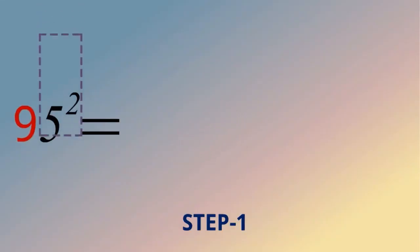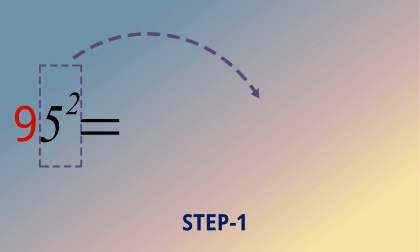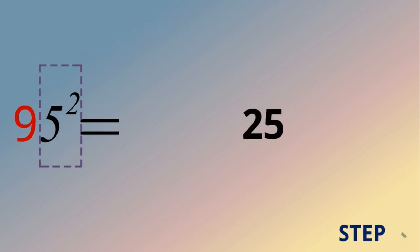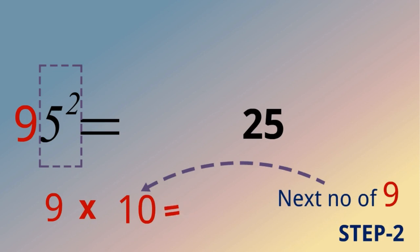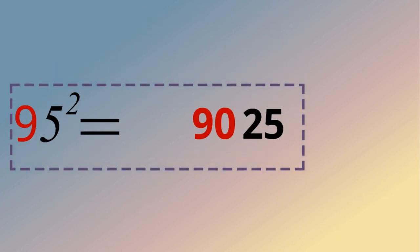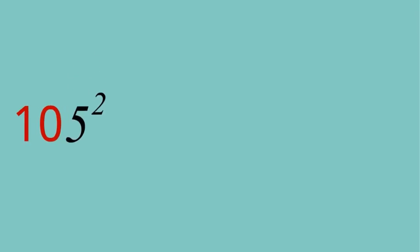Another example: 95 squared. Step one: 5 squared, we know that is 25, we write 25 here. Step two: 9 and the next number of 9 is 10. We multiply 9 and 10: 9 multiplied by 10 is equal to 90, and it will be moved here. So it becomes 9025. 95 squared is equal to 9025.